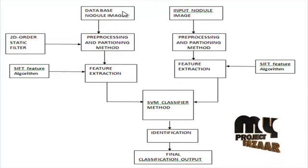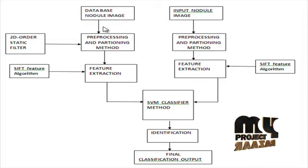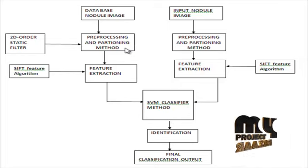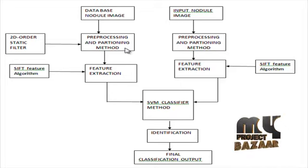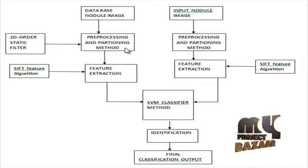First, the input image is taken from the database of nodal images, then the nodal input image goes to the pre-processing step. The pre-processing step uses the 2D order statistic filter. This filter considers each pixel in an image and looks at its nearby neighbors to decide whether or not it is representative of its surroundings. It is often desirable to perform noise reduction on an image or signal.